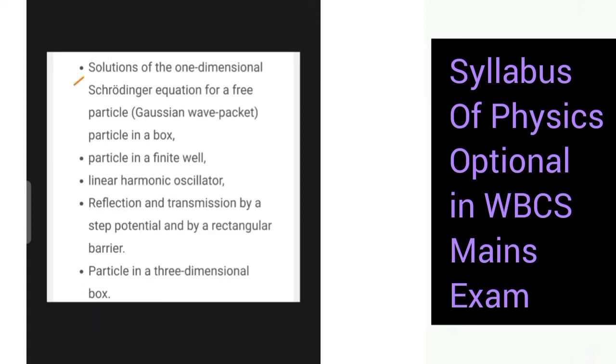Next we have this portion on solutions of the one-dimensional Schrödinger equation for a free particle, Gaussian wave packet, particle in a box, particle in a finite well, linear harmonic oscillator. Then reflection and transmission by a step potential and by a rectangular barrier. Then we have particle in a three-dimensional box.